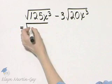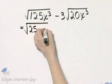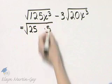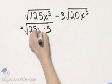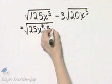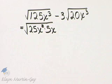125 is 25 times 5, and 25 is a perfect square factor, and x cubed is x squared times x, and x squared is a perfect square factor.